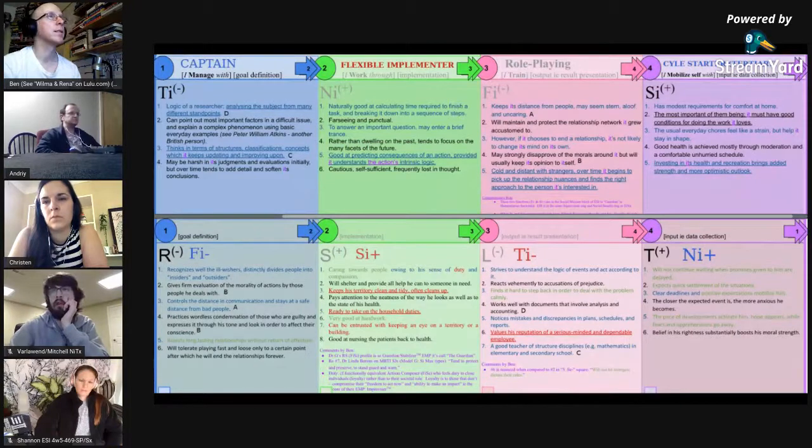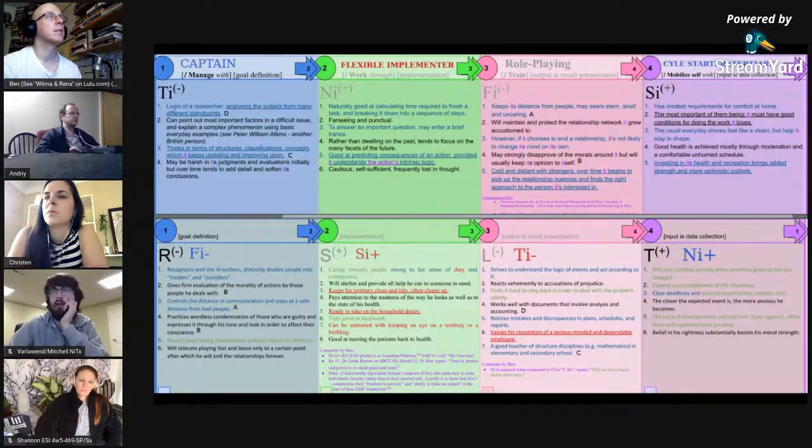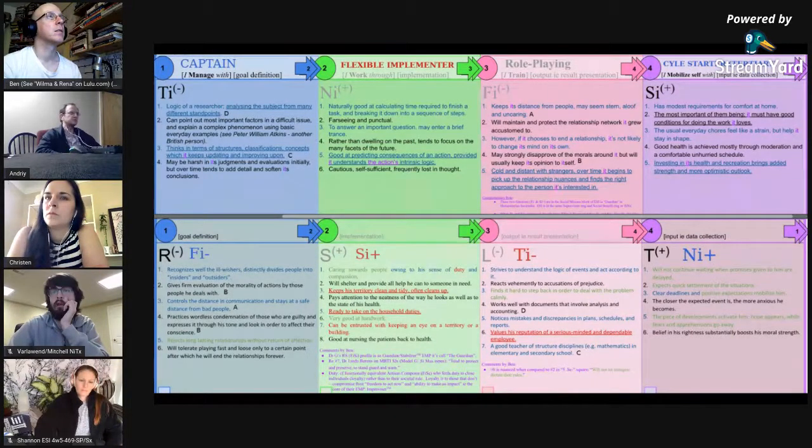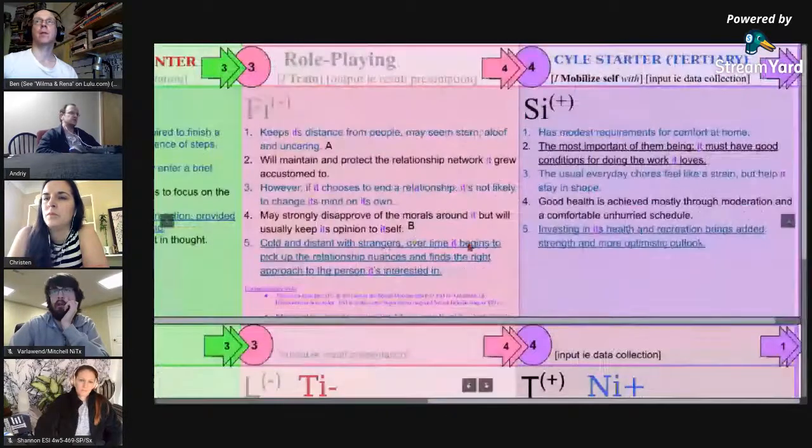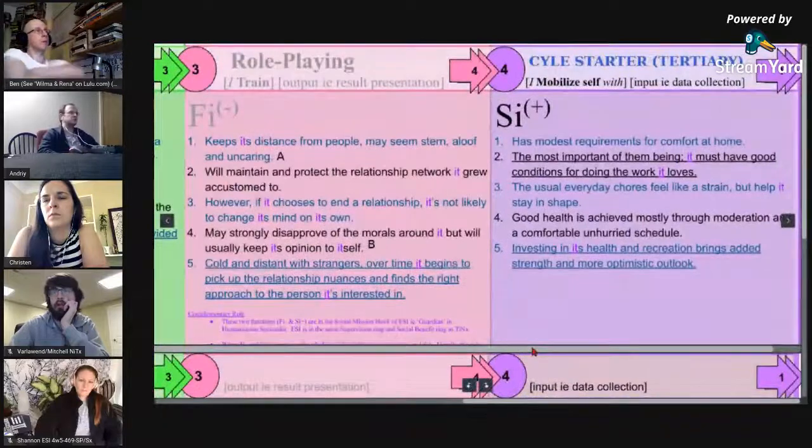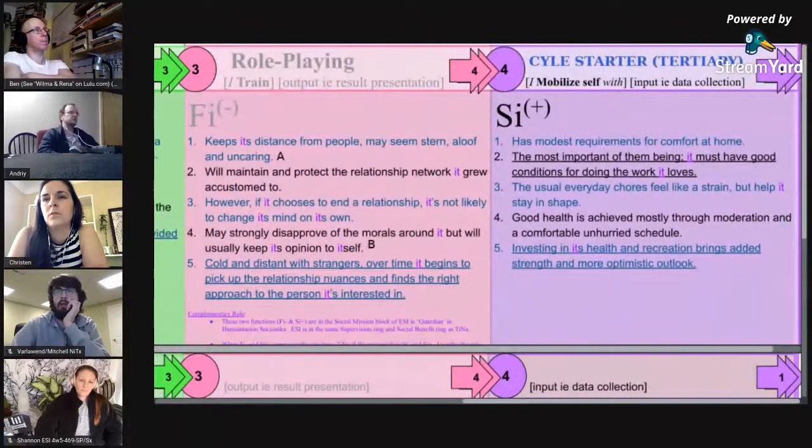Now, role-playing function, you can think of as a defense mechanism, is when you find yourself in a situation where you're unable to use your leading function. So for Ti,